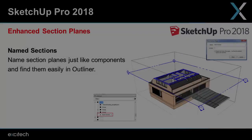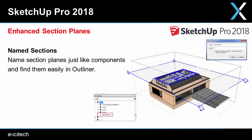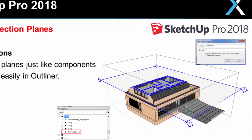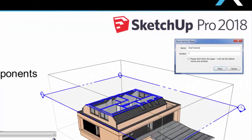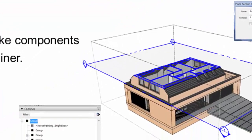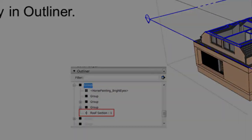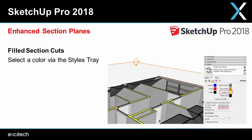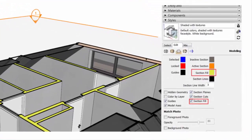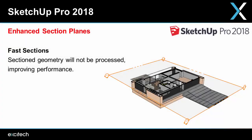Next up, a long-awaited enhancement: advanced section planes. Section planes can now be named, so adding them is like adding a component, and you can find them in the outliner. As you add section cuts, you'll see the sections filled in via the styles tray, where you can turn this on and change the fill color. Finally, section geometry will not be processed, which improves model performance.